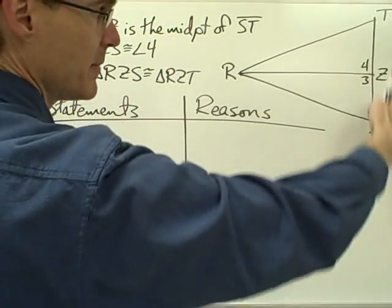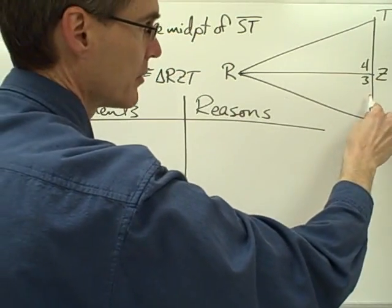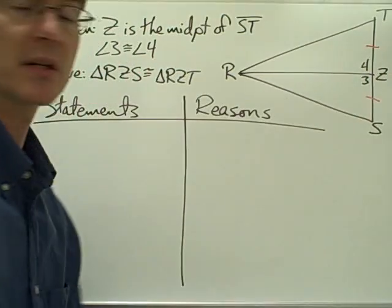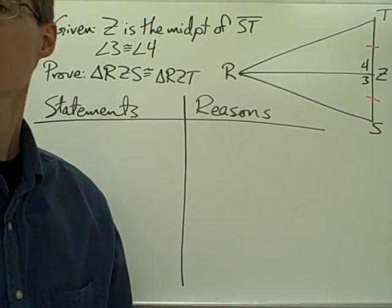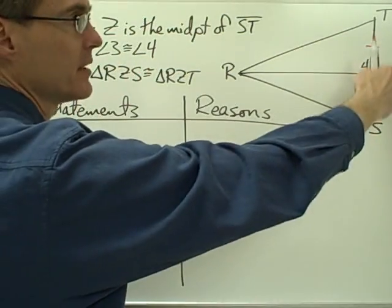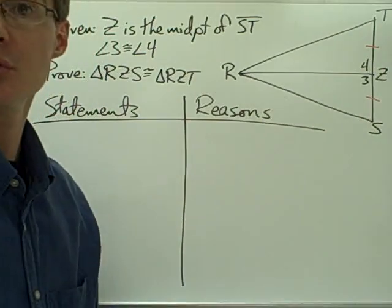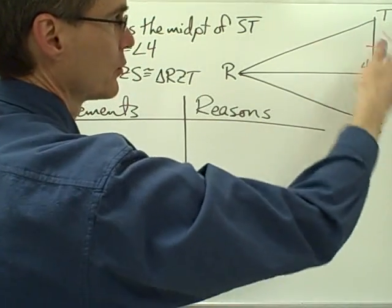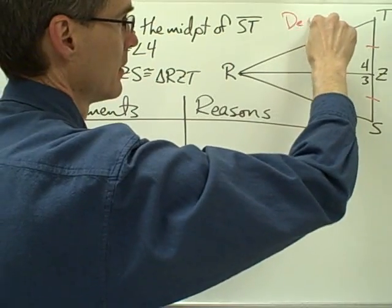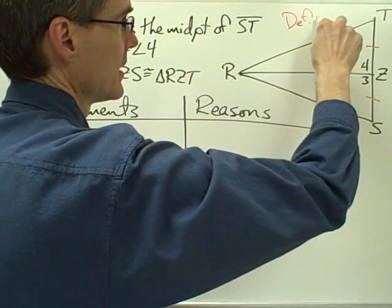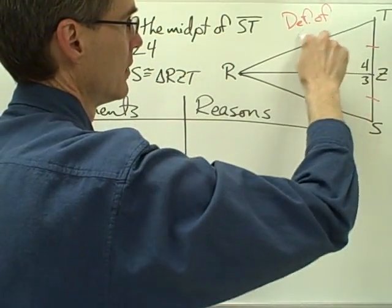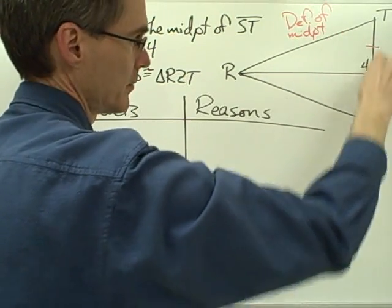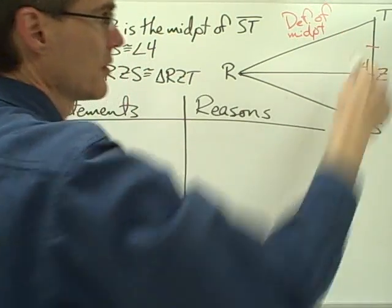If point Z is the midpoint of this segment, then I know that these two segments must be congruent because that's the definition of a midpoint. A midpoint is a point that divides a segment into two congruent segments, so I can make these two congruence marks here by the definition of a midpoint. That's how come these two segments here are congruent.